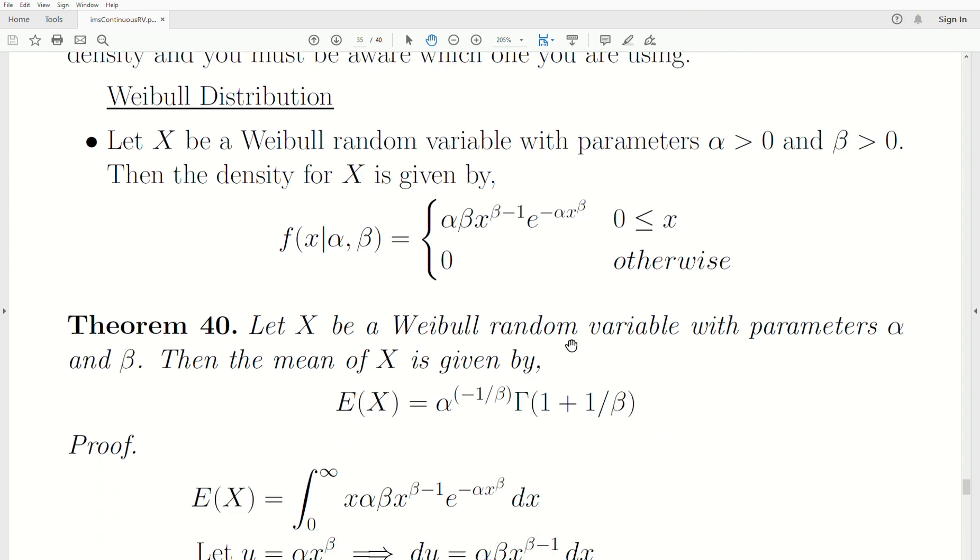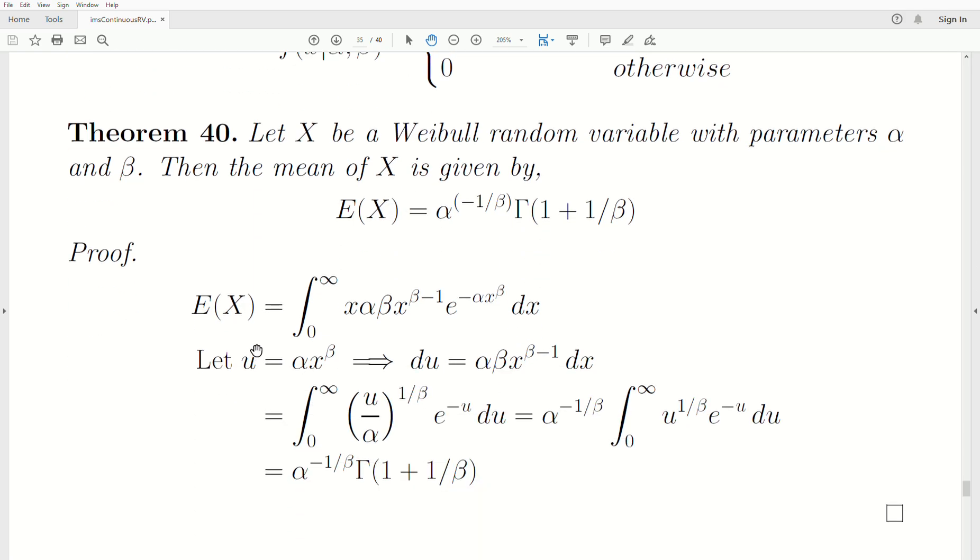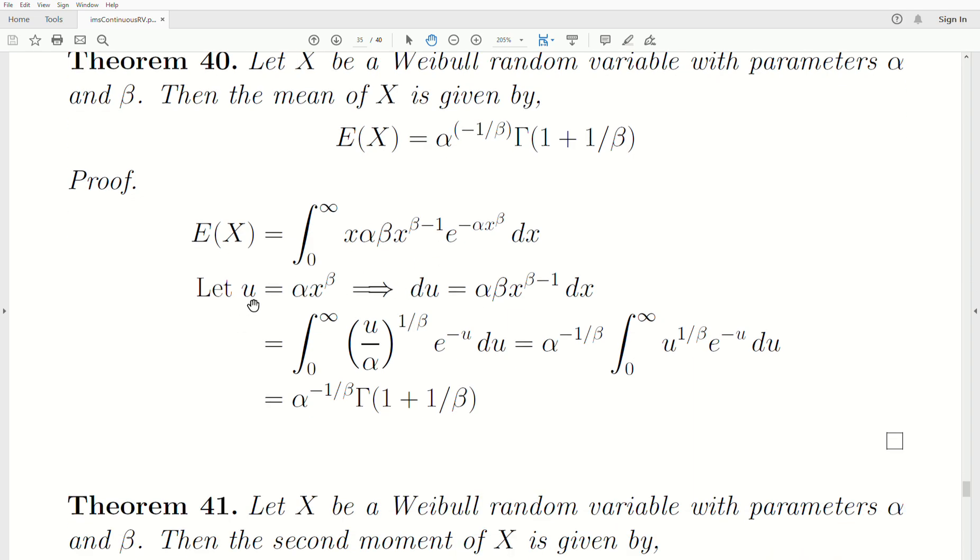Theorem 40: Let X be a Weibull random variable with parameters alpha and beta, then the mean of X is given by this expression. Let's prove it. The expected value of X is you take X times the density integrated over all possible values, which is 0 to infinity. A U substitution of alpha X to the beta, which is essentially this exponent here, then DU is equal to alpha beta X to the beta minus 1 DX.